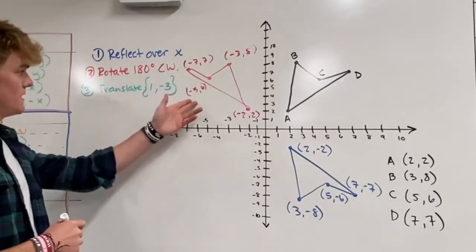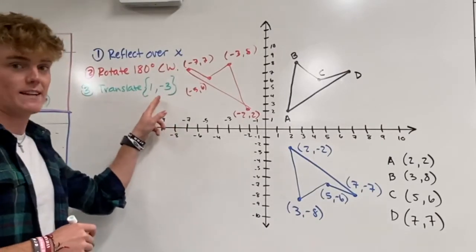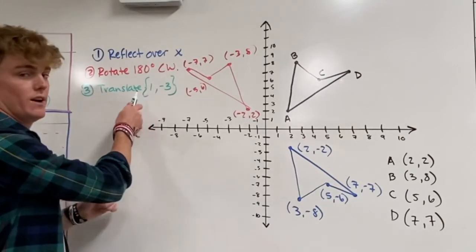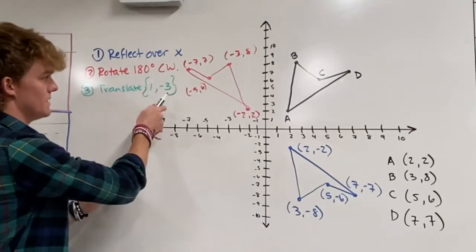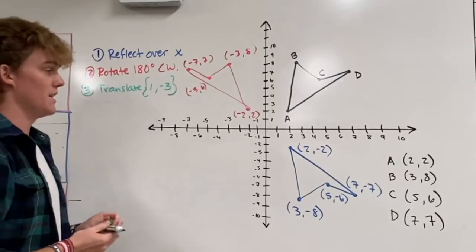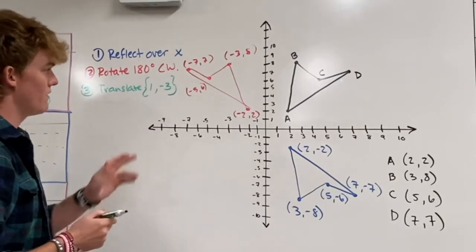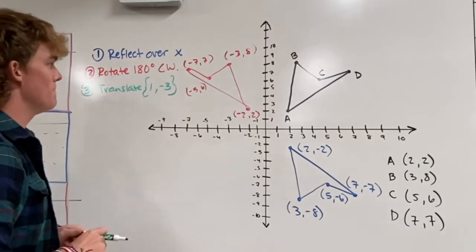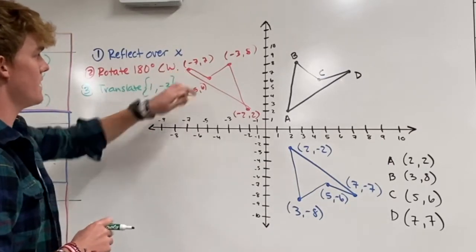Lastly we're going to translate this image with this vector notation. And remember this is the horizontal movement or how the x changes, and this is the vertical movement or how the y changes. So we're going to every coordinate pair add 1 to the x and subtract 3 from the y.